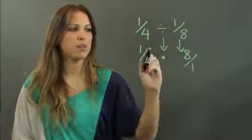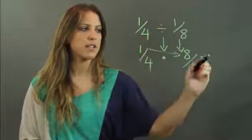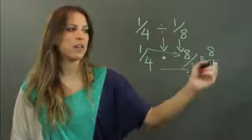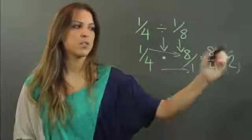And now I go ahead and multiply straight across. So one times eight is eight and four times one is four. And now I can simplify that because I know that eight divided by four is two.